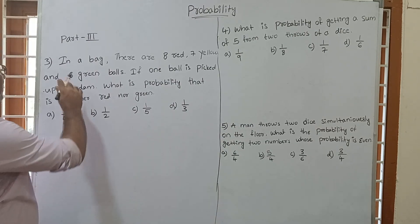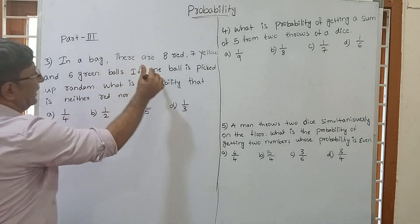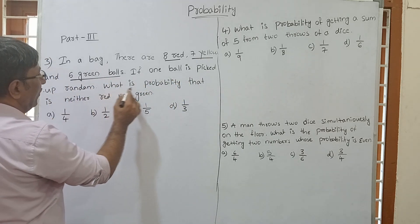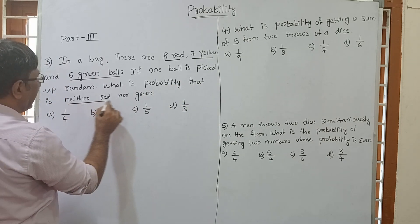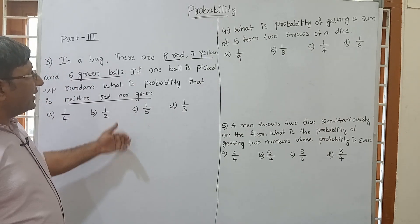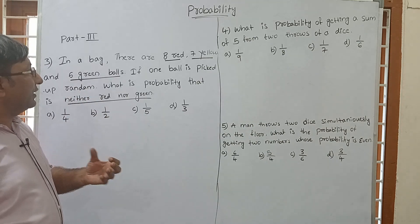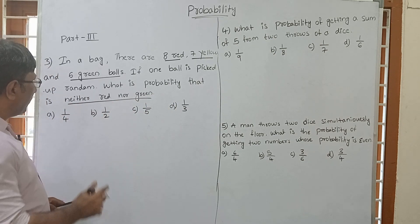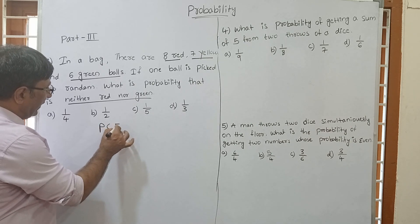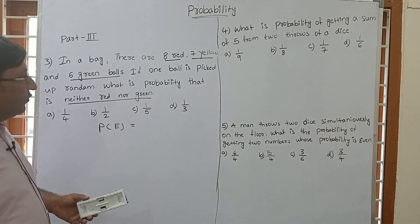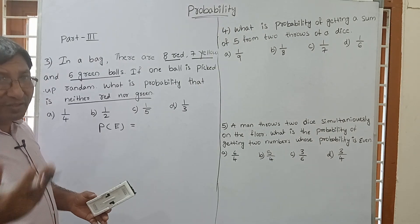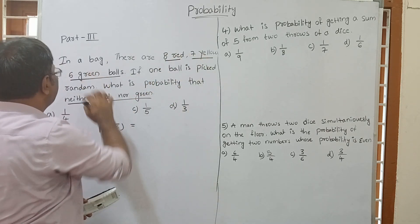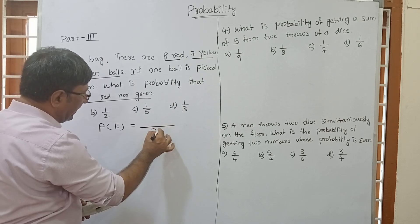Question number 3: in a bag there are 8 red, 7 yellow and 6 green balls. If 1 ball is picked at random, what is the probability that it is neither red nor green? Probability of any event equals favourable outcome divided by total outcome. Total balls: 8 plus 7 plus 6 equals 21.